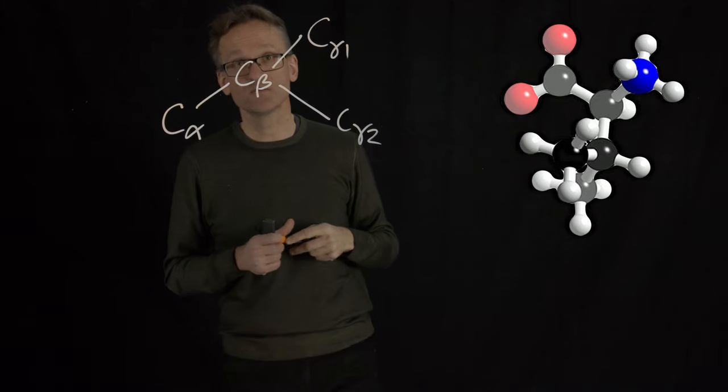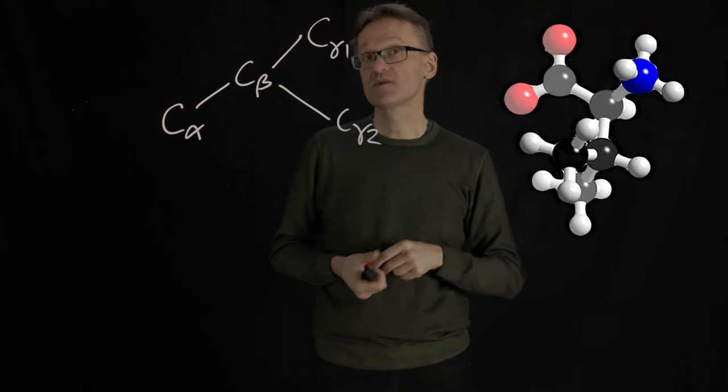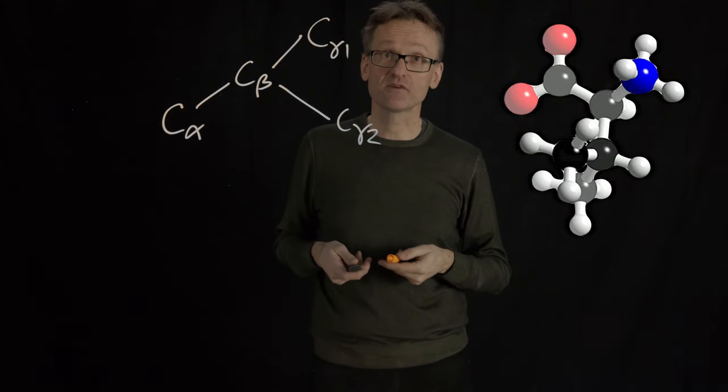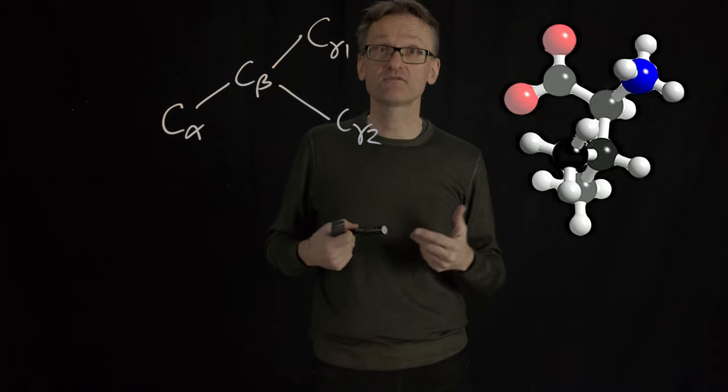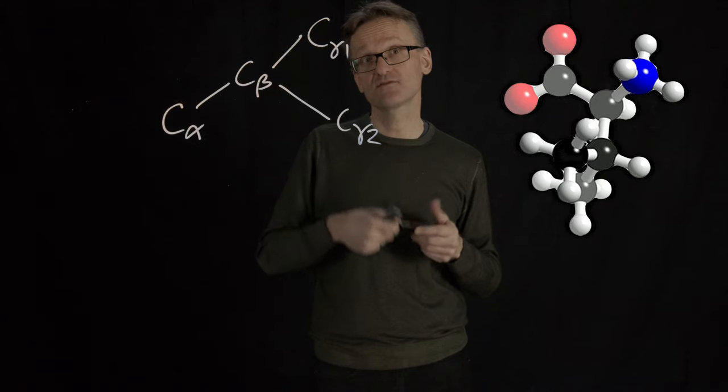If I had a fourth one here, it would be C-delta, C-epsilon, etc. So we use letters in the Greek alphabet to name the carbons, while we use this chi-1, chi-2, chi-3 to name the torsion angles involved in those carbons.